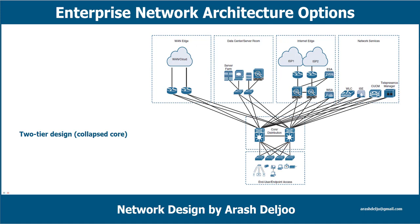I'm going to first talk about the two-tier design, or collapsed core. We learned about the two-tier design in the previous video. A smaller network may have departments spread across multiple floors within a building. This environment may not require a separate core network, so collapsing the core function into the distribution layer may help on cost in designing a suitable network.